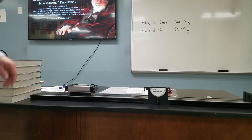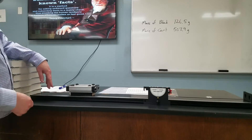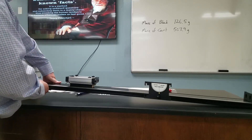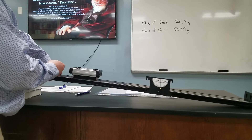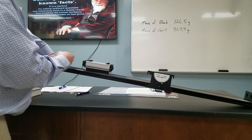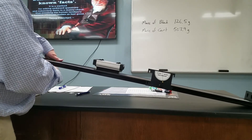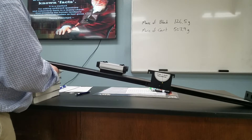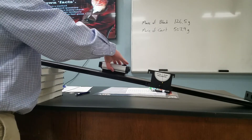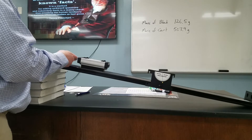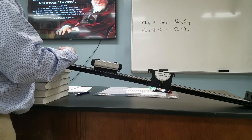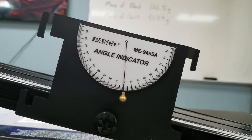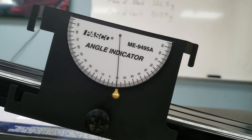Now for kinetic friction, we're going to raise this and tap on it to break that static friction so we should only get the kinetic friction. Right there, that's where it starts moving on its own — there's the angle measurement for it. That's wood down, wood against the track, for kinetic friction.